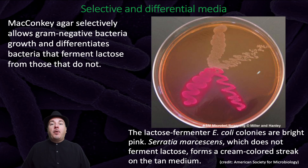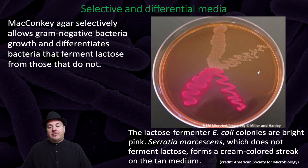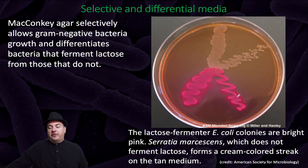We also have media that is both selective and differential. For example, MacConkey agar selectively allows gram-negative bacteria growth and differentiates bacteria that ferment lactose from those that do not. It is selective because it only allows gram-negative, not gram-positive, bacteria to grow. When the gram-negative bacteria grow, it can differentiate the ones that can ferment lactose — shown as bright pink — from the ones that cannot ferment lactose, shown as a cream color.